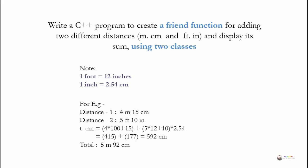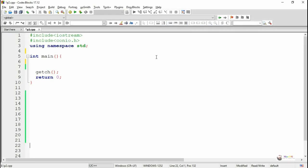Similarly, the second distance will be converted into centimeters. The feet will be multiplied by 12 to convert into inches, plus the remaining 10 inches, and that will be multiplied by 2.54. So 415 is the centimeter value of distance 1, and 177 is distance 2 in centimeters. The total centimeter is then converted back into meter and centimeter.